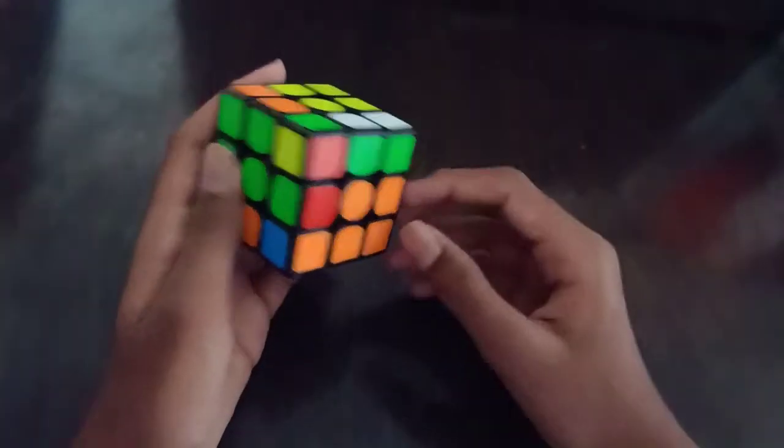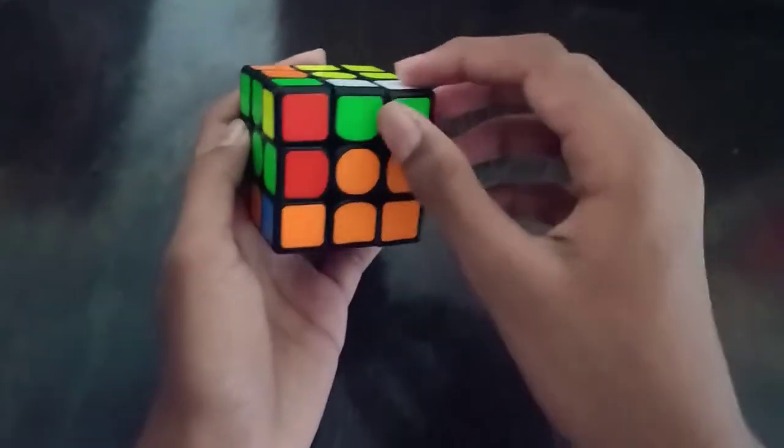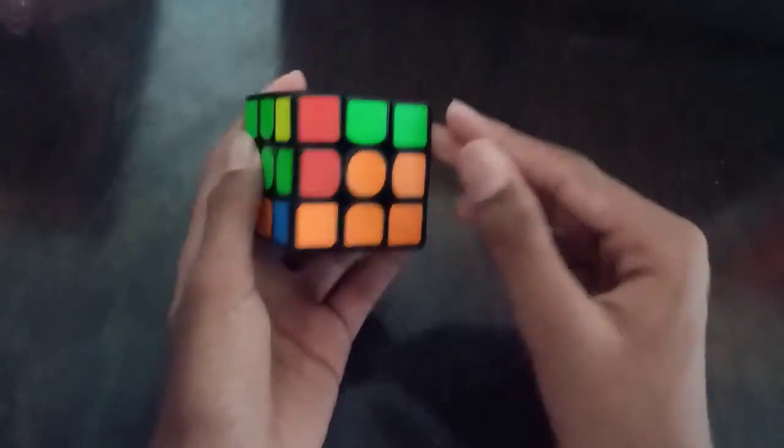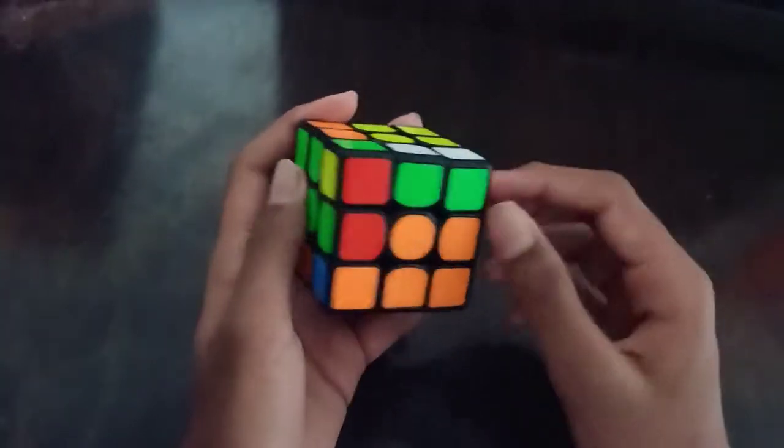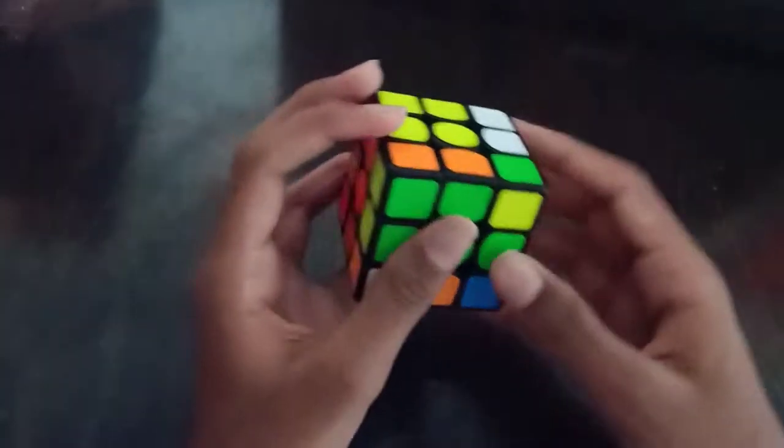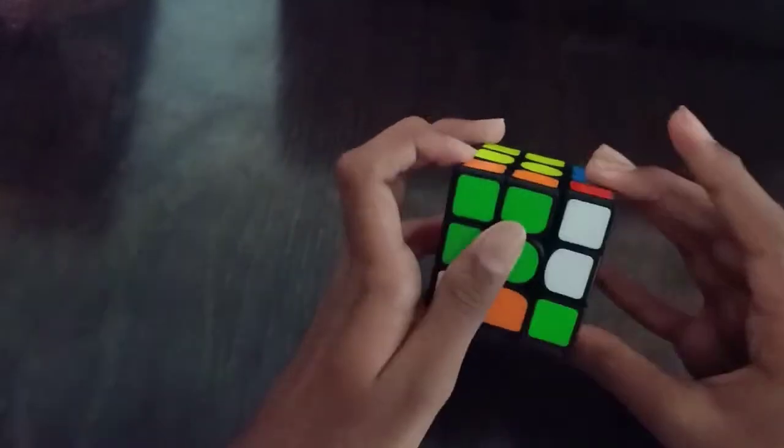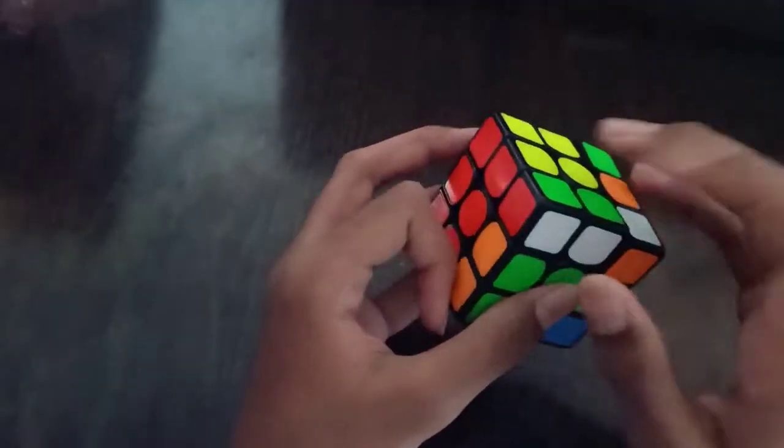what you have to see is this pair. You have to think that this pair needs to go right here. So we have to insert this pair right here. To do this, we do R' F R first to make this